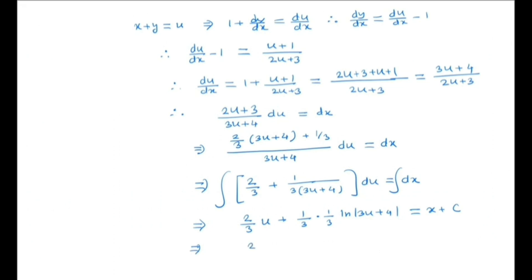Now put the value of u which is x plus y. So we have 2/3 times x plus y, plus 1/9 ln of 3 times x plus y plus 4, equals x plus C, which is the general solution.